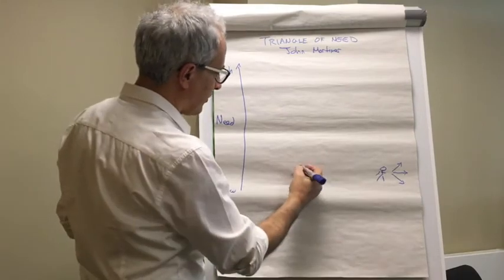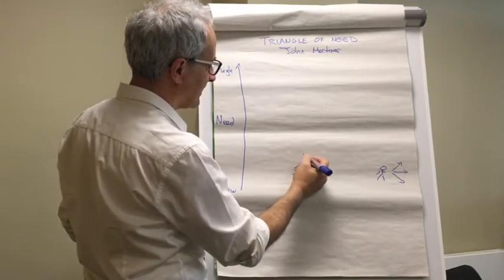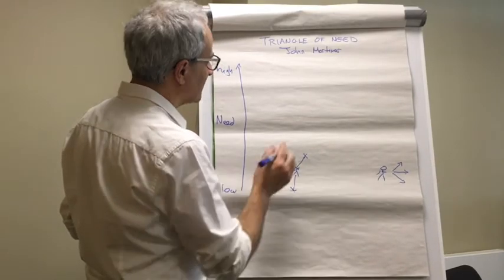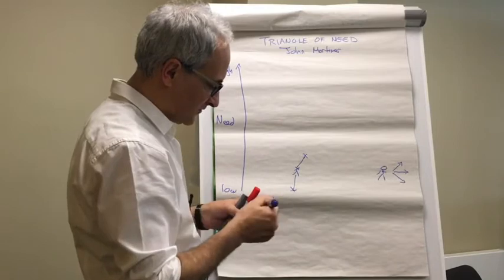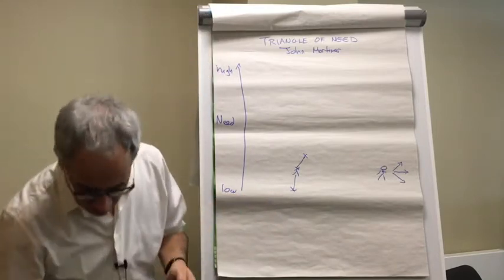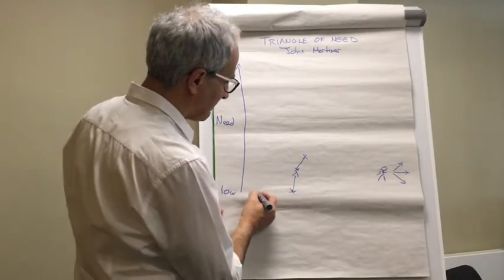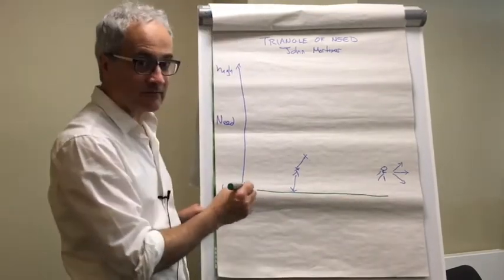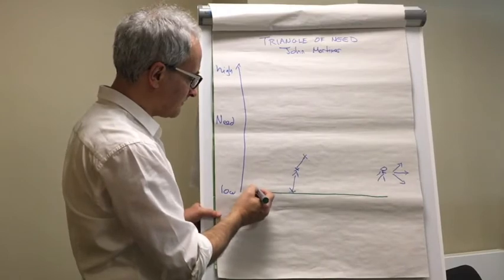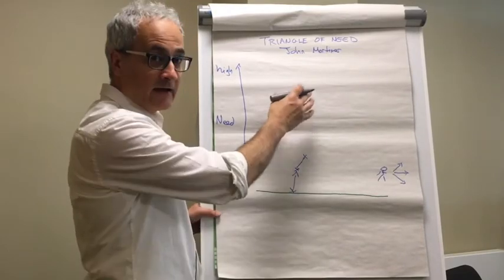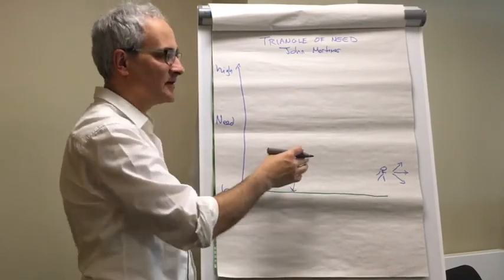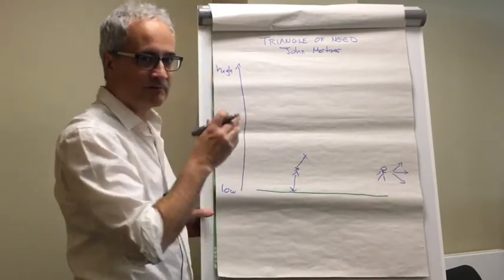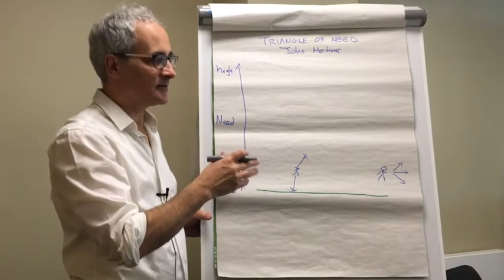So what may happen with some people is their level of need increases. What's interesting about this is if you track this with the population, you'll find that the great majority of people are down here with very low levels of need and they can cope. And as they get higher in terms of level of need, their ability to cope reduces and the amount of support they need increases.